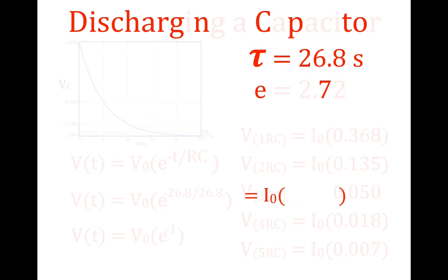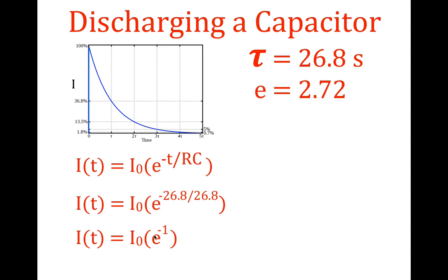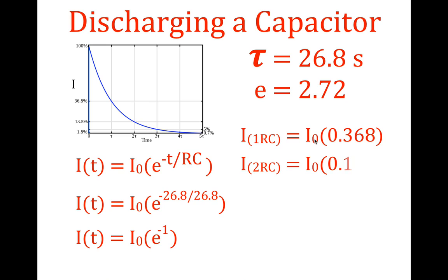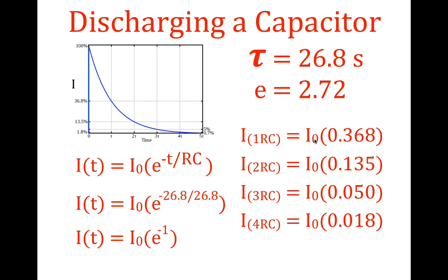The same applies for the current. Substituting the values in — e to the minus one — after one time constant, the current through the circuit is 36.8% of the initial maximum current. We do the same for up to five time constants with the same time constant of 26.8 seconds: 53.6 seconds for two time constants, 80.4 for three, 107.2 for four, and approximately 134 seconds for five time constants.